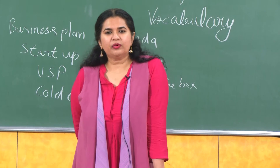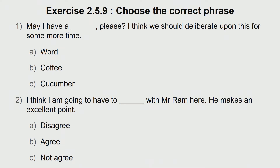Now let us look at an exercise before we wind up for the day — choose the correct phrase. First: may I have a dash please, I think we should deliberate upon this for some more time — word, coffee, or cucumber. It is very clear because we are talking about a business meeting — 'may I have a word here please' means can I say something. Second: I think I am going to have to dash with Mr. Ram here — he makes an excellent point. Since he makes an excellent point, the answer has to be agree: 'I think I am going to have to agree with Mr. Ram here because he makes an excellent point.'